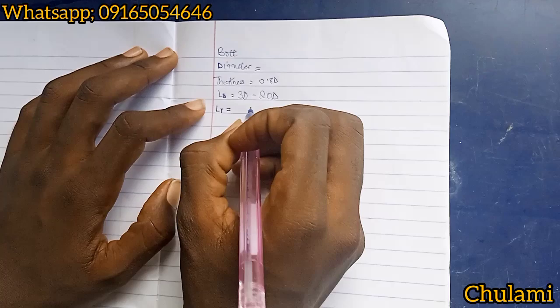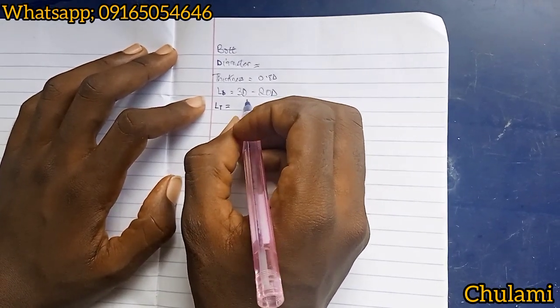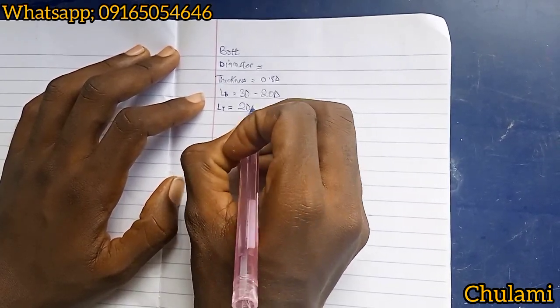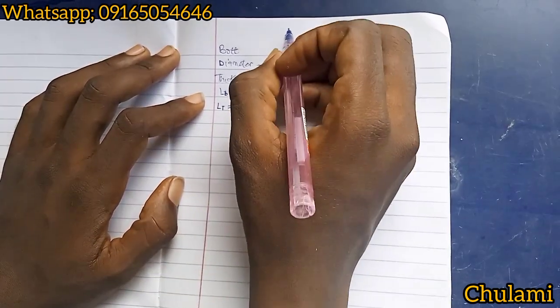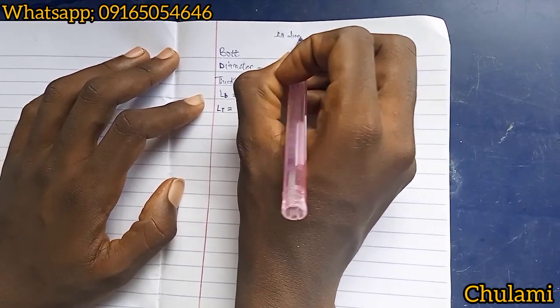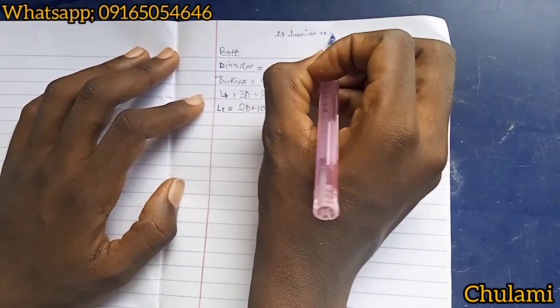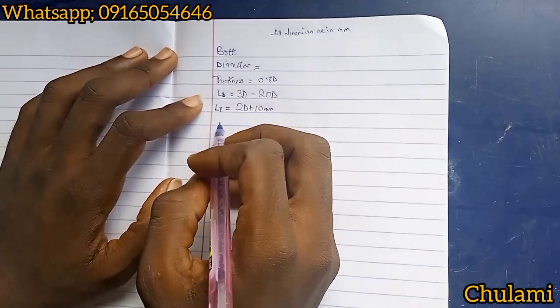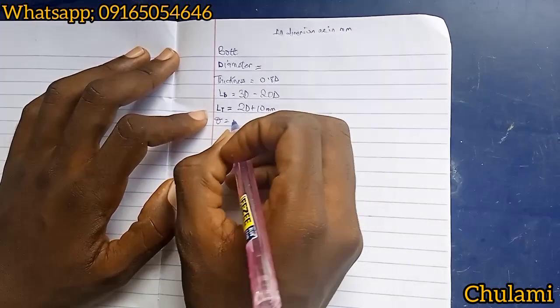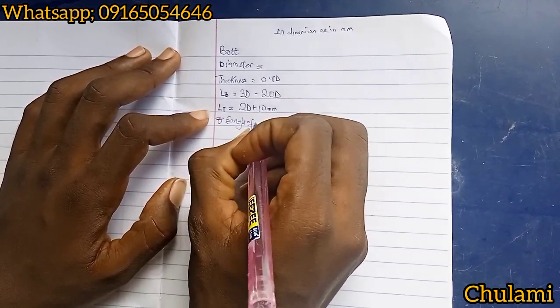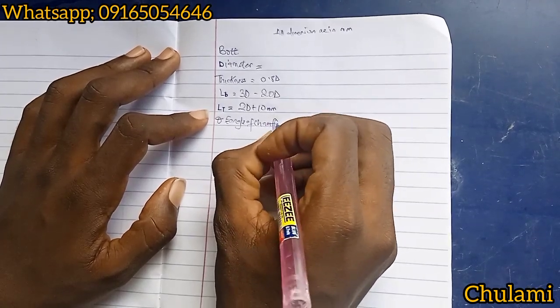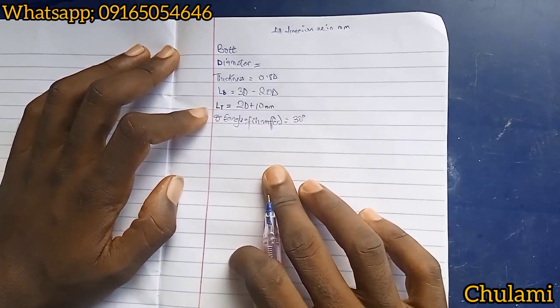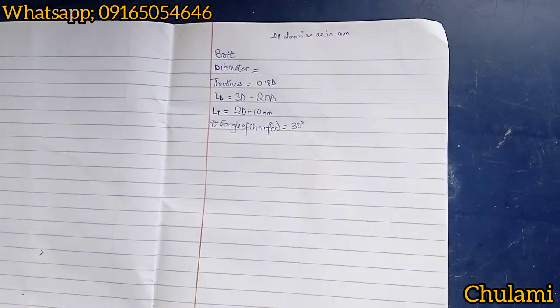We have length of the threaded portion. This is varying in different directions - it can be given, but if it's not given, use this formula: 2d plus 10 millimeter. Remember all dimensions are in millimeter. Now we know that our angle of chamfer theta is equal to 30 degrees. Okay, basically this is all we need when we are drawing.